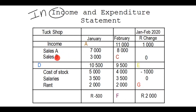Expenditure means expenses — think of 'exit', that's money that goes out of your pocket or out of your bank account. Expenses would be things like the cost of stock, salaries, rent, and all that. So basically all the stock that you buy in a business forms part of the expenses.